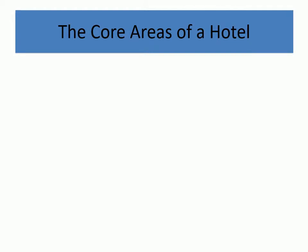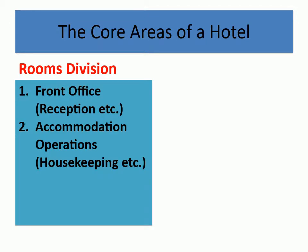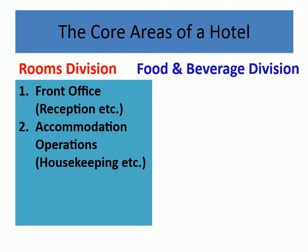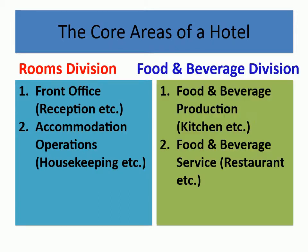The core areas of a hotel. Rooms division: front office, reception, etc.; accommodation operations, housekeeping, etc. Food and beverage division: food and beverage production, kitchen, etc.; food and beverage service, restaurant, etc.